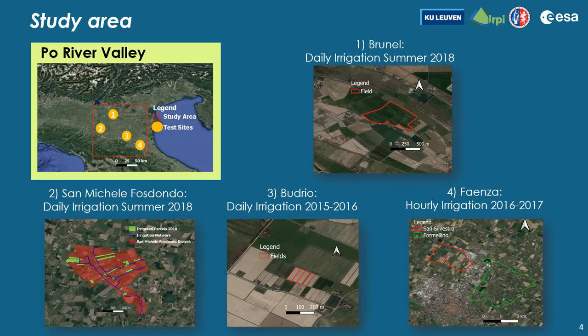The study area is the Po River Valley in Italy, where we have collected irrigation data over four test sites called Brunel, Bodrio, San Michele Fosdondo, and Faenza.